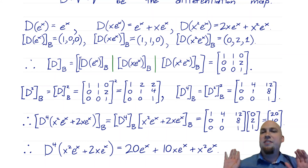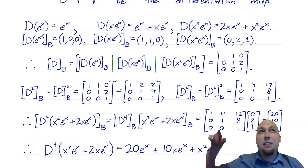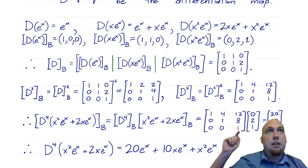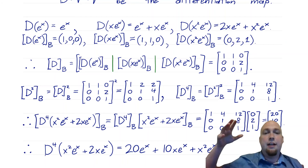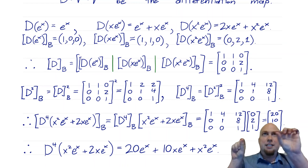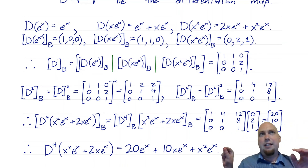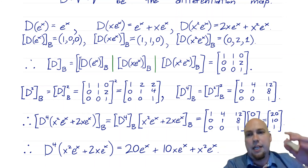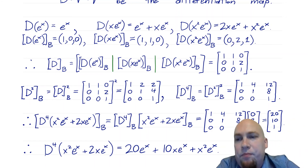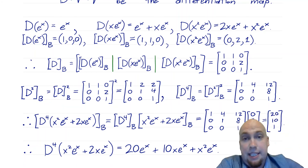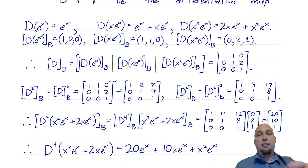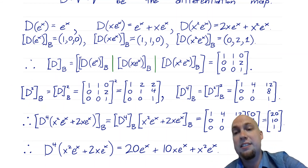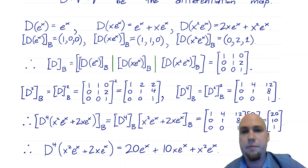But we don't want the standard matrix of D — we want the standard matrix of D to the fourth power. Fortunately, we can square D and then square again to get D⁴. The standard matrix of D squared is the square of the standard matrix of D, as our previous theorem tells us. So we multiply this matrix by itself and get the standard matrix of D².